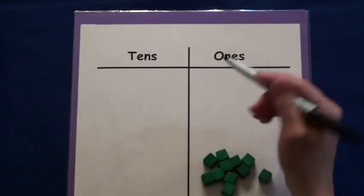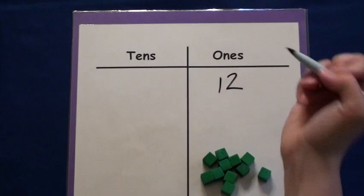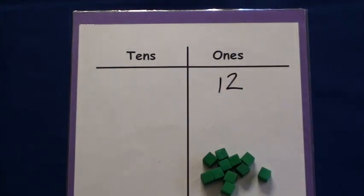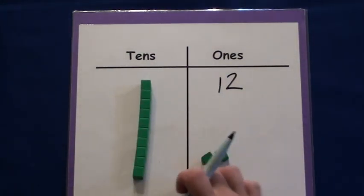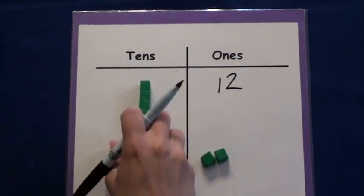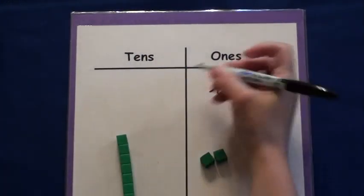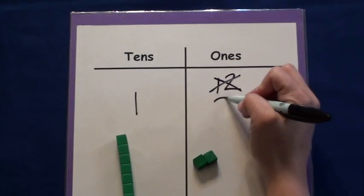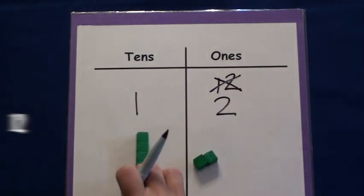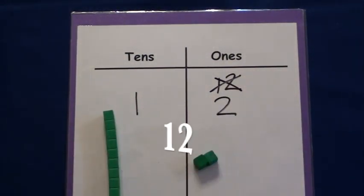Instead of using twelve ones cubes, we group together ten and use a tens block. We leave the two leftover blocks as ones cubes. This is much easier to count. When we write the number, we write a two in the ones column and a one in the tens, just like this.